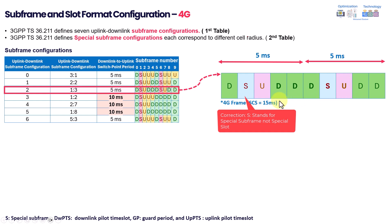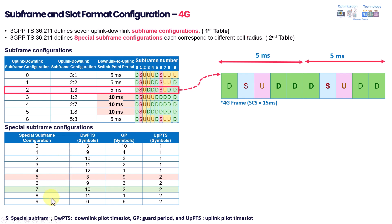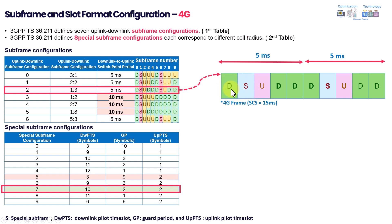This 4G configuration is fixed and cannot be changed. For the special slot, there is also a special SSP (special subframe) configuration — 3GPP defines up to 9 configurations. The most commonly used are 1, 5, or 7. For example, configuration 7 means that within a subframe of 14 symbols, the distribution of downlink, uplink, and guardband symbols is defined. For instance, a 10-2-2 setting means 10 symbols for downlink, 2 for guardband, and 2 for uplink.